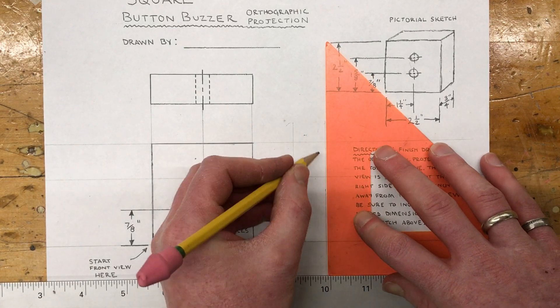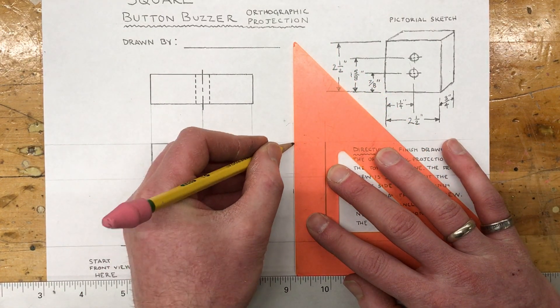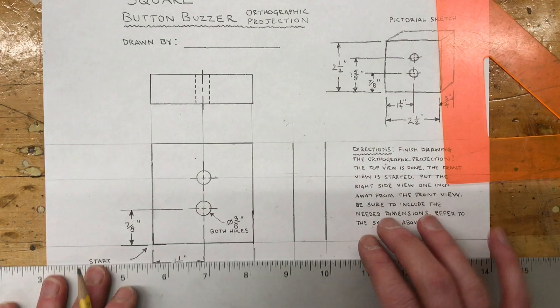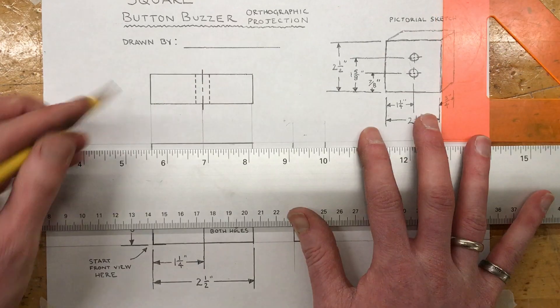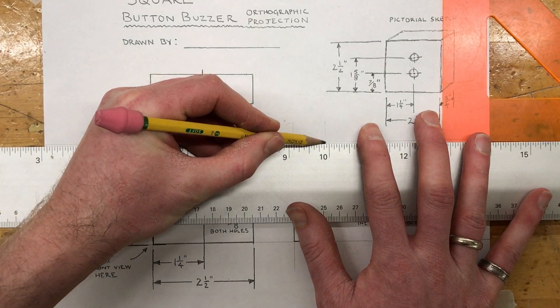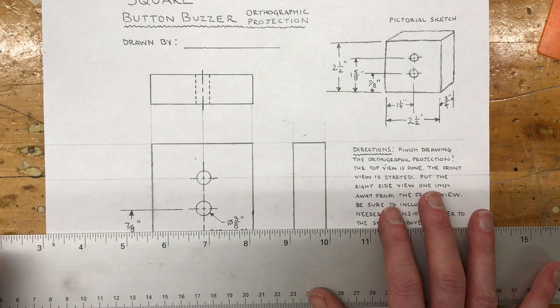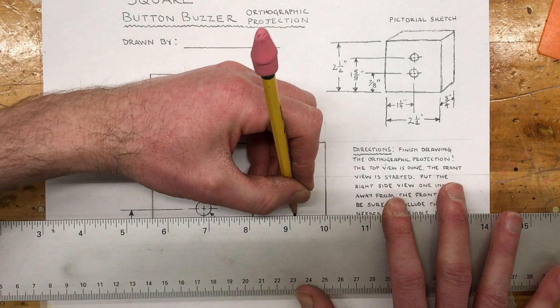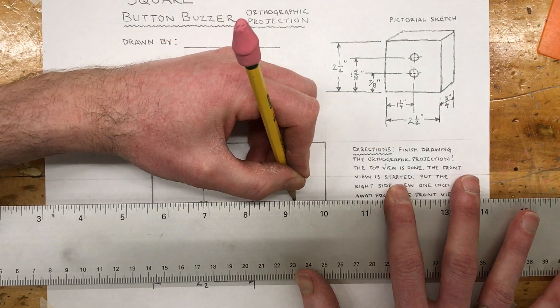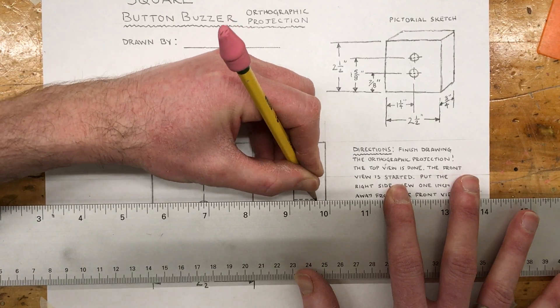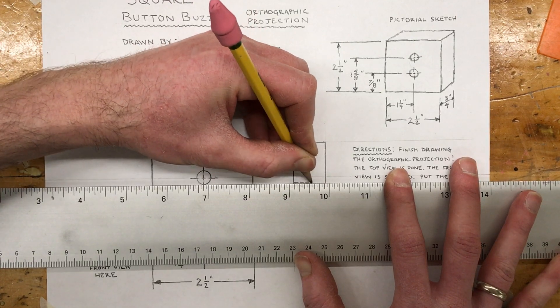Again in these orthographic drawings you draw everything with light lines first, and then you can actually go back and darken in the edges that need to be darkened in. So this is all the visible lines that make up the object. In line with the edges of the hole I'm going to do dashed lines - these are my hidden lines. So from the right side view you can't see these holes, but to communicate that they're there, in line with the edge of the hole you do those dashed lines which are called hidden lines.